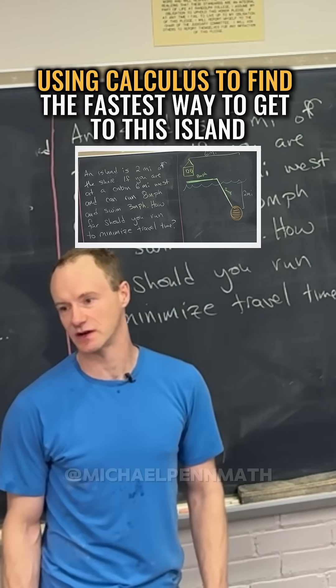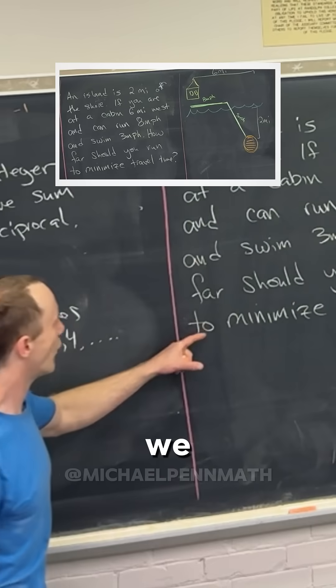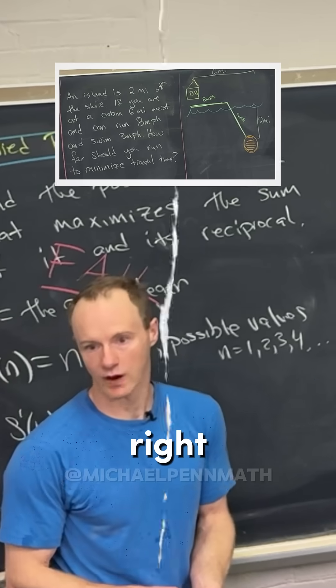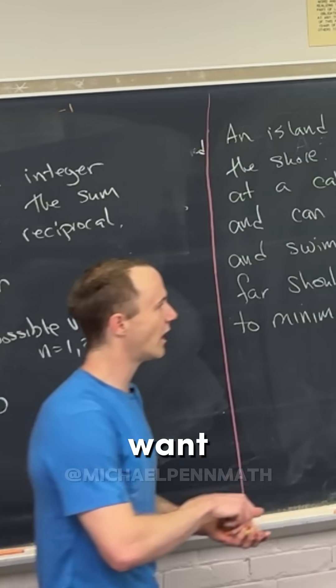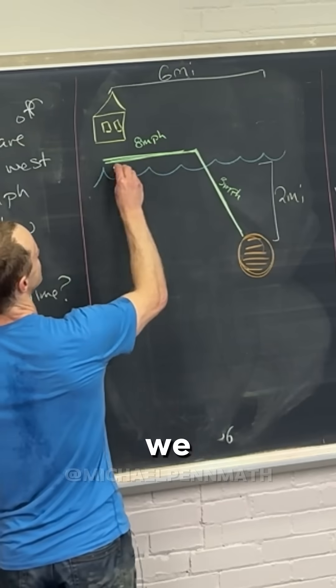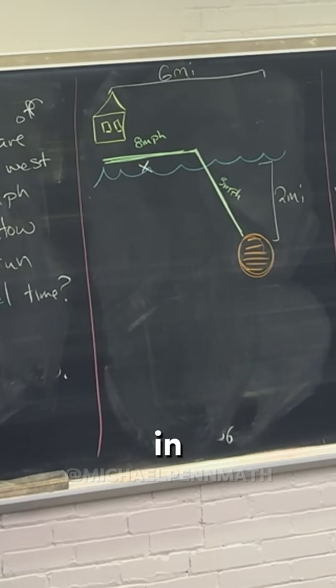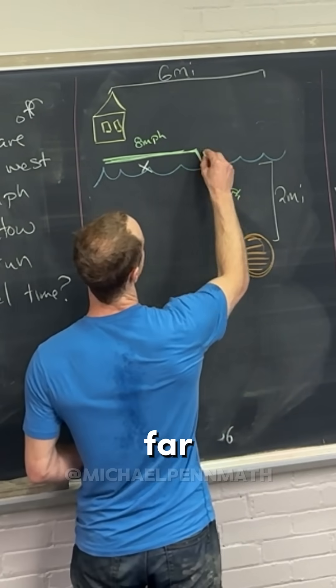All right, so this is our situation here. We want to know how far we should run on the ground, so we want this value right here. Perhaps we would call this length x. Let's fill in the rest of the diagram.